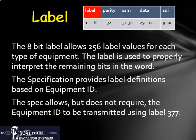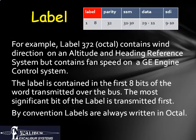The label is used to interpret all the remaining fields. Each type of equipment typically only requires between 5 and 20 different labels. Since there are many different types of equipment, each equipment type can redefine the labels for its own use. For example, label 372 on a heading reference system would be interpreted as containing information relating to wind direction. On a GE engine control system, the same label would be interpreted as containing fan speed.